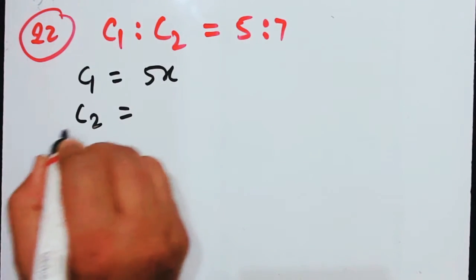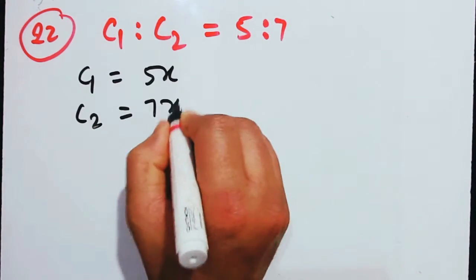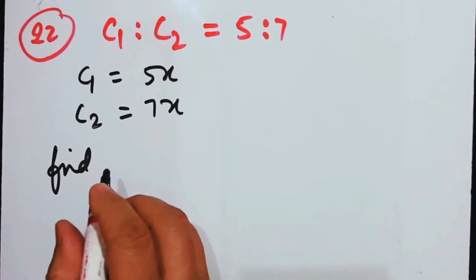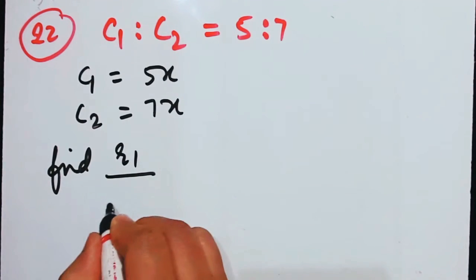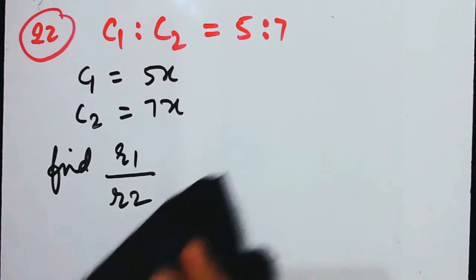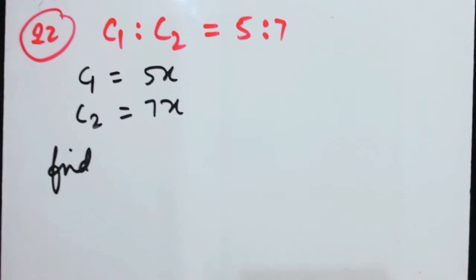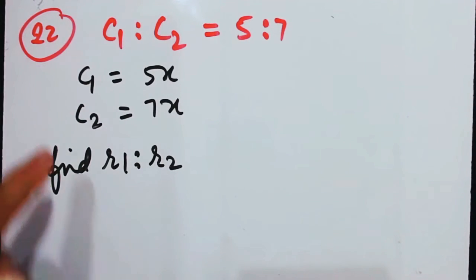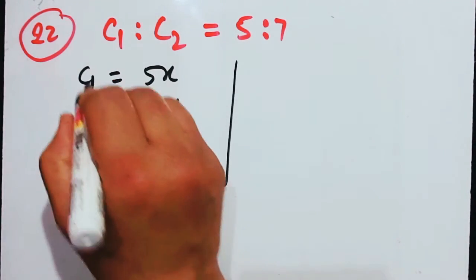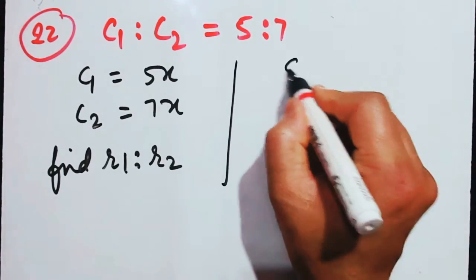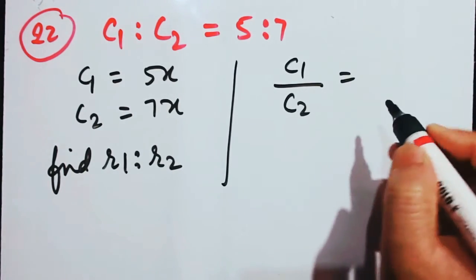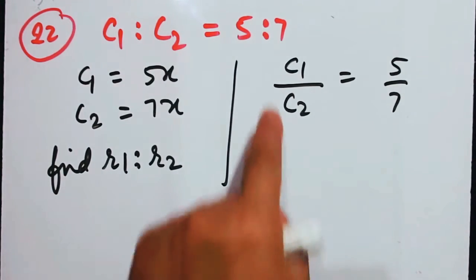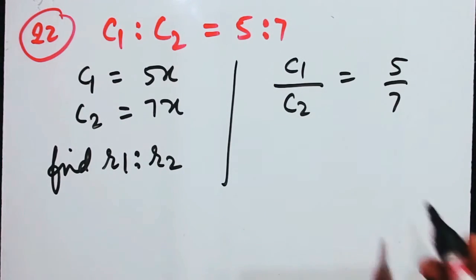They are asking us to find the ratio between the radii, that is R1 is to R2. We put C1/C2 equals 5 by 7 into the formula.